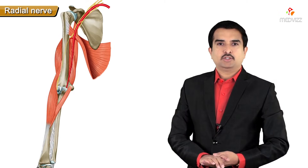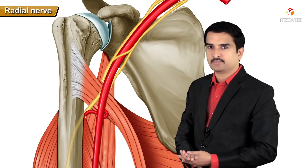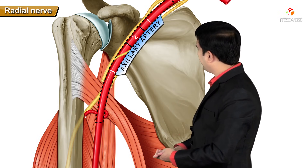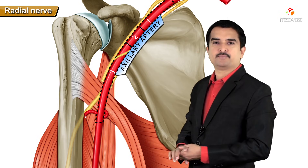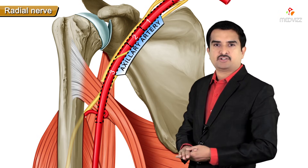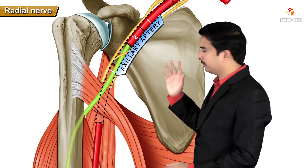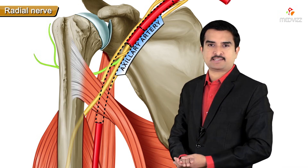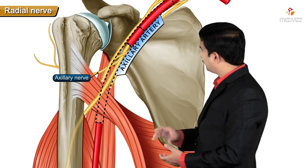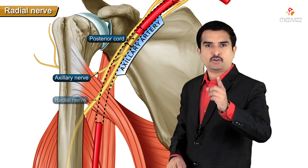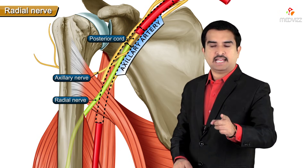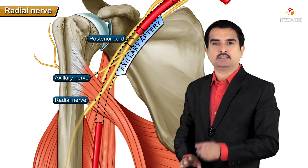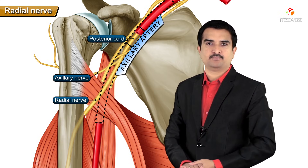Looking at the location of the radial nerve in the axilla, it is easy to identify in relation to the third part of the axillary artery. The nerve is exactly behind the third part of the axillary artery. This is also where we find the axillary nerve, because both the axillary nerve and the radial nerve arise from the posterior cord of the brachial plexus, positioned exactly behind the third part of the axillary artery.